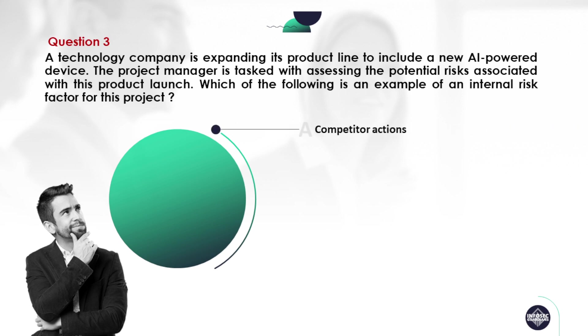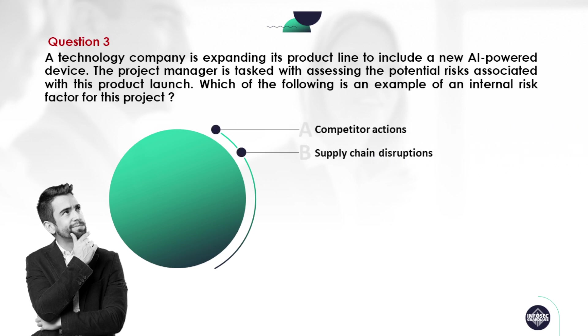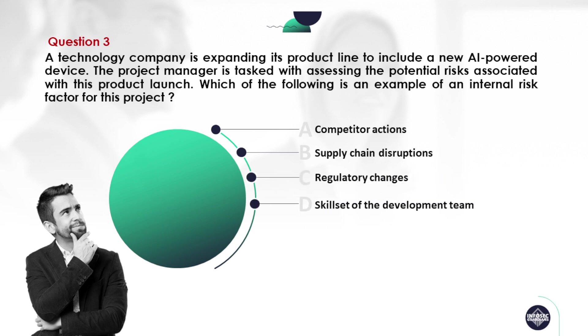Option A: competitor actions. Option B: supply chain disruptions. Option C: regulatory changes. Option D: skill set of the development team.